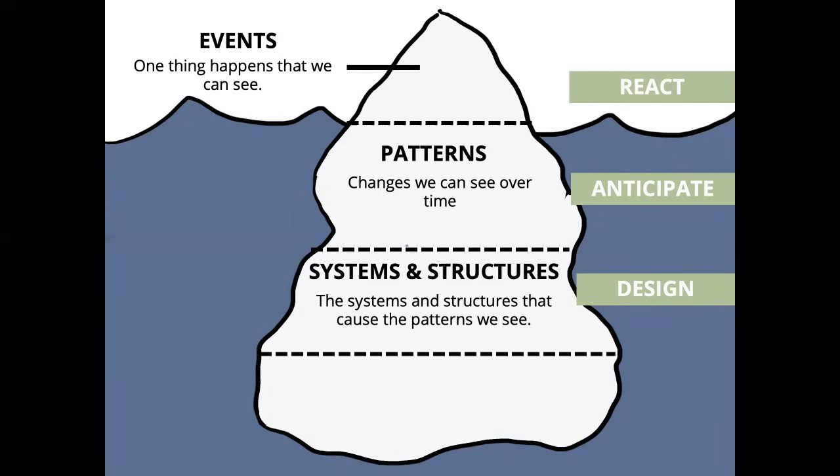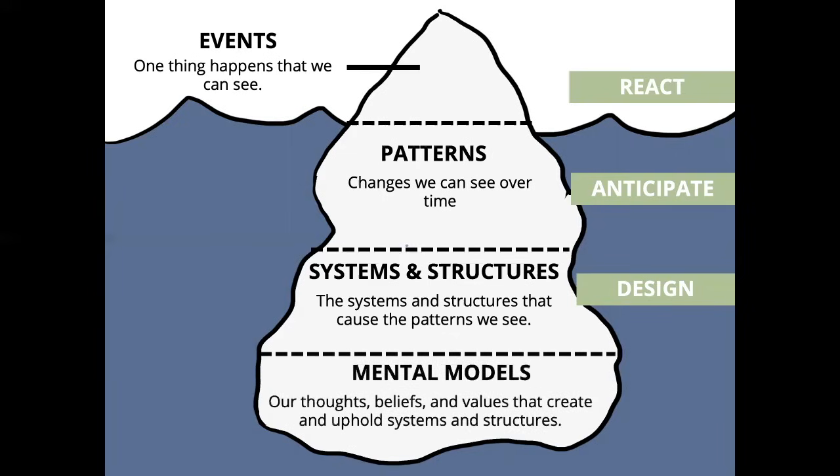Systems and structures often occur because of our mental models, the bottom-most layer of this system's iceberg. These mental models are our beliefs, our thoughts, and our values that hold everything else up and shape our worldview. If we can change people's worldviews, we can transform a system to create very powerful change.